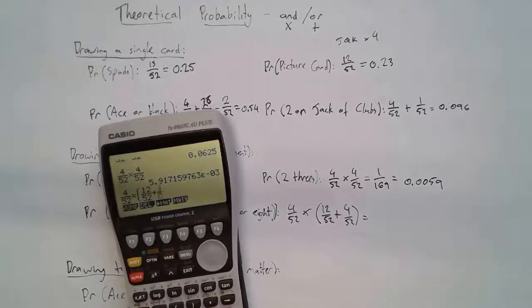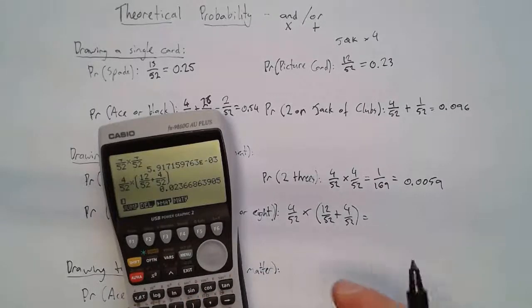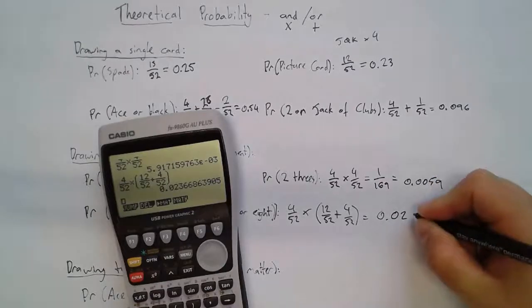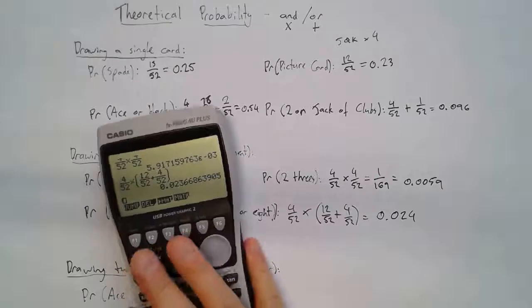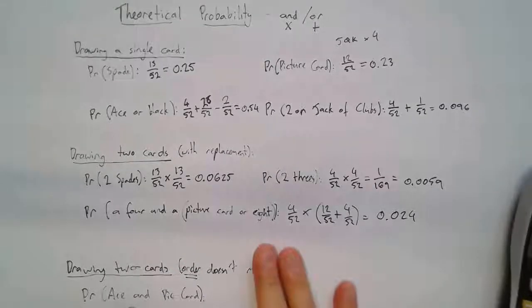So the calculation is 4/52 times (12 + 4)/52, which equals 0.024.